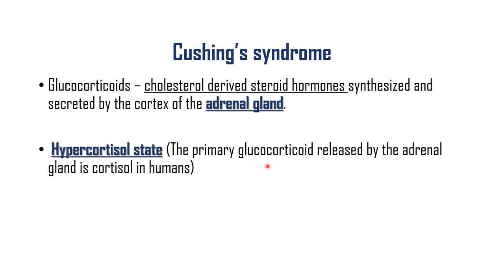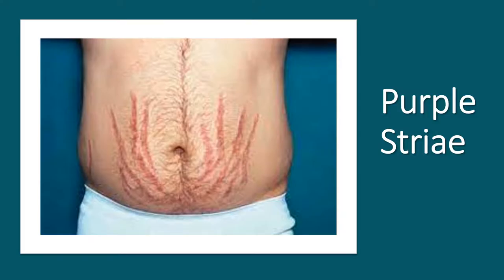Cushing's syndrome is also known as a hypercortisol state because the primary glucocorticoid secreted and released by the adrenal gland in humans is cortisol. So when there is excess glucocorticoids, it is also termed a hypercortisol state, referring to the primary glucocorticoid released in humans.